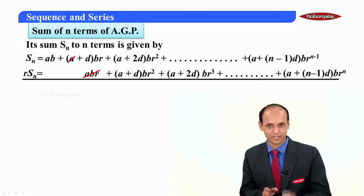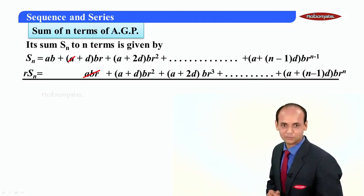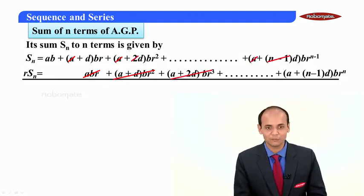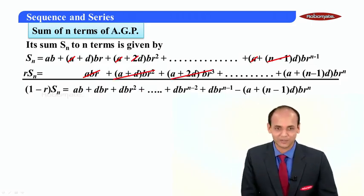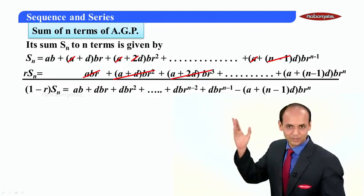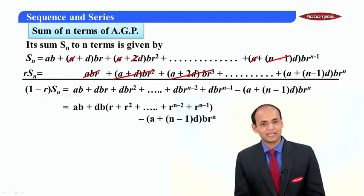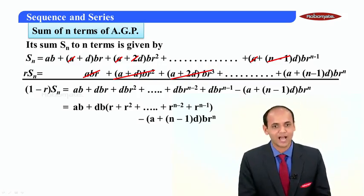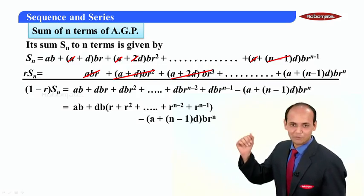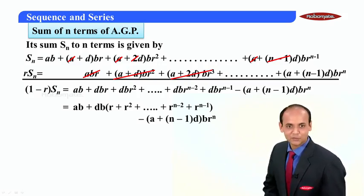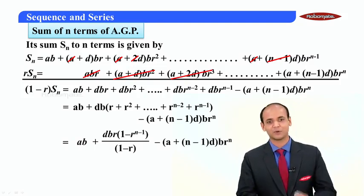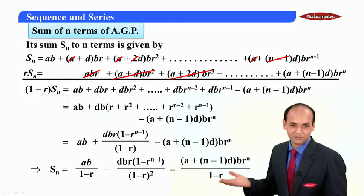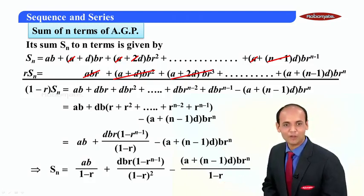Now I am going to subtract these two series. When subtracting, the terms start cancelling out — A·BR cancels from the second and first expressions. Similarly, the second, third terms and so on cancel. So 1 minus R into Sn is obtained. Taking DR common from the remaining terms gives DR into (R + R² + ... + R^(n-1)), which is a GP with first term R and common ratio R. Using the sum formula for GP, we obtain the result, and dividing by (1−R) gives the sum of n terms. Students, we do not have to remember this formula — we have to remember this method.